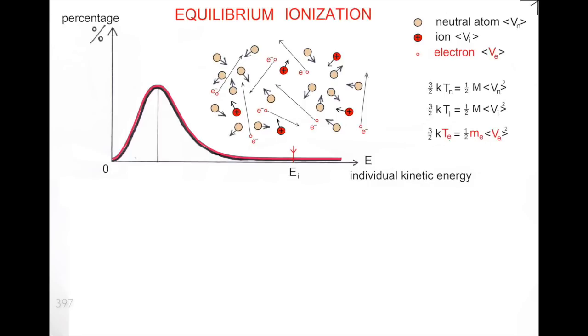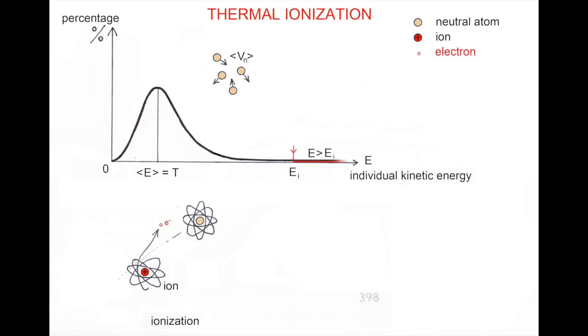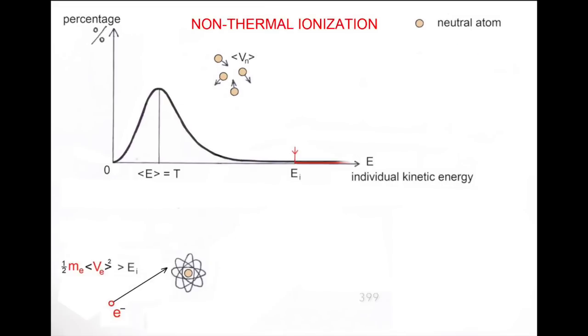In the preceding images, we have considered a thermal ionization process, where the free electrons come from the collisions between neutrons. But the energy can be brought by an electric field. In such conditions, the free electrons come from the collisions between electrons and atoms or molecules. This is called a non-thermal ionization regime.